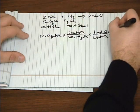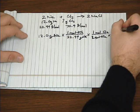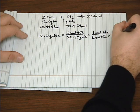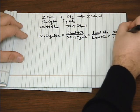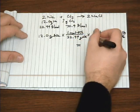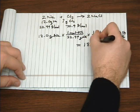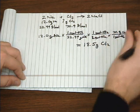And if we're looking for grams, we've got to use chlorine's molar mass to convert it from moles to grams. And that would give us 18.5 grams of chlorine.